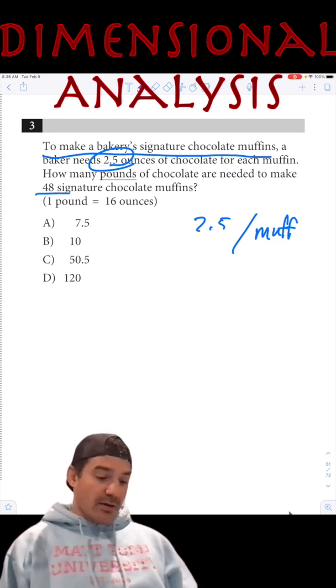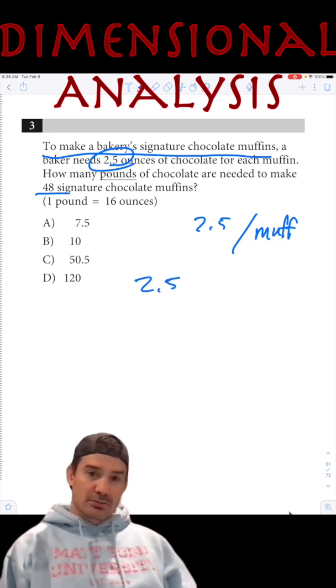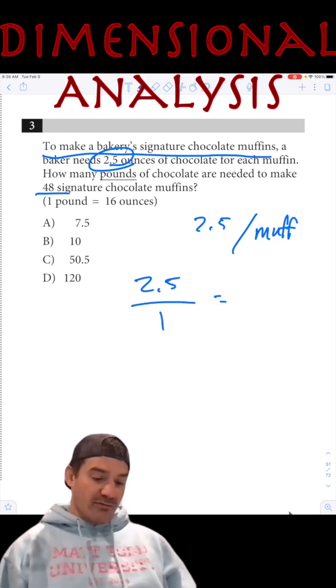No big deal. So again, for every one muffin, I have 2.5 ounces of chocolate, right? That's not a big deal. And that's for one muffin. If I want 48 muffins, what do I need?